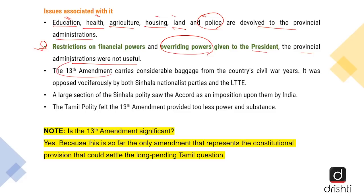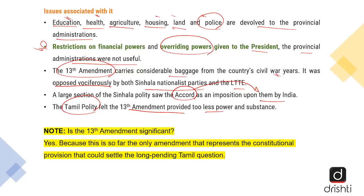The 13th Amendment carries considerable baggage and hurt between the Sinhala majority and the Tamil minority from the civil war years. It is vociferously opposed by both the Sinhala Nationalist Parties and the LTTE. The Sinhala Nationalist Party felt the accord was an imposition by India, an interference in their internal affairs. The Tamil polity felt the 13th Amendment provided too little power and was practically of no use. However, the 13th Amendment holds significance as it is the only constitutional provision that could potentially settle the long-pending Tamil question and bring about peace in the neighborhood.